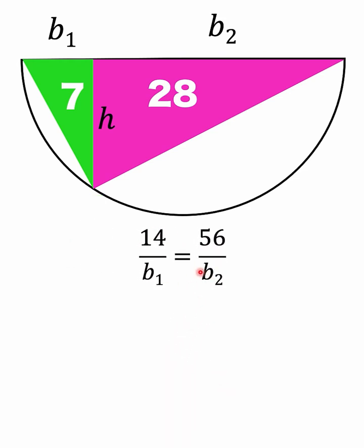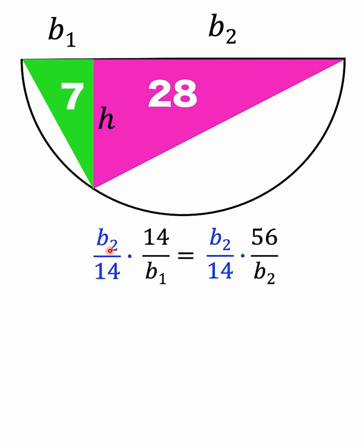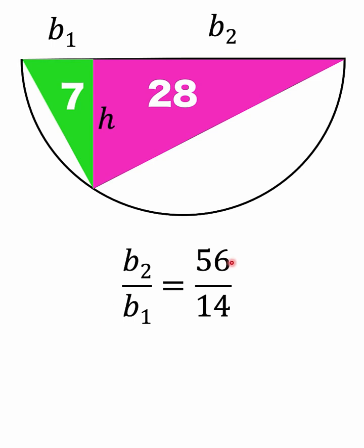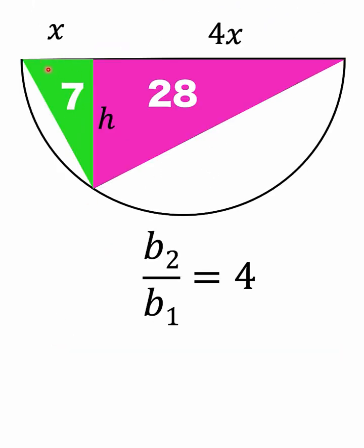From 14 / b₁ = 56 / b₂ we can find the ratio b₂ / b₁ by multiplying both sides by b₂ over 14. The left side becomes b₂ / b₁ and the right side simplifies to 56 / 14 = 4. So the ratio of b₂ to b₁ is 4 to 1. If we let the leg of the green right triangle be x, then the leg of the pink right triangle is 4x.